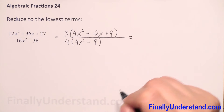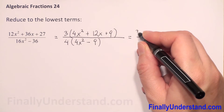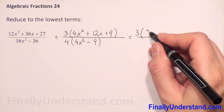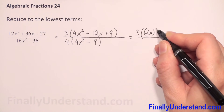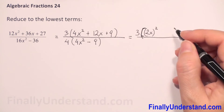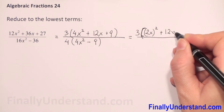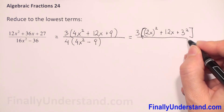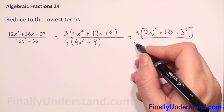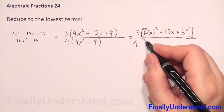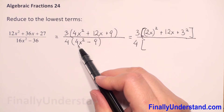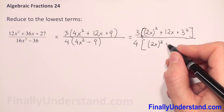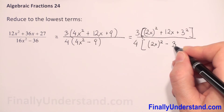Now, what else we can do in the numerator. We copy the 3, and we have 4x². We can rewrite that as 2x to the second power, and we have plus 12x and 9 — where 9 is 3 to the second power. In our denominator we have 4, and in parentheses we can rewrite 4x² as 2x to the second power, minus 3 to the second power.